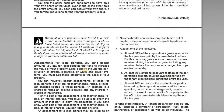There are also assessments for local benefits. Publication 530 includes a caution: you have to look at your real estate bill to decide if any non-deductible itemized charges are included. If your taxing authority doesn't furnish you a copy of your bill, you need to ask for it. The reason you have to look at it is because the amount you paid to the county likely isn't the amount that's actually deductible — you have to apportion it between the ad valorem and the non-ad valorem components.